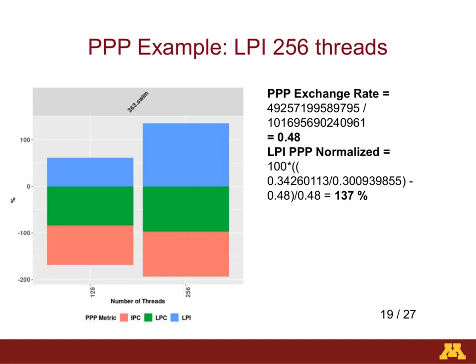Here is a worked-out example going back to the 363.swim benchmark, looking at the loads per instruction rate. We compute the PPP exchange rate by dividing the number of retired instructions for the 256-thread run by the retired instructions of the 64-thread baseline run. This results in a PPP exchange rate of 0.48. We then divide the LPI rate for 256 threads by the LPI of 64 threads, and use the PPP exchange rate to subtract and then divide. The resulting PPP rate was 137% for 256 threads, and the corresponding PPP rate for the 128-thread run was 61%.